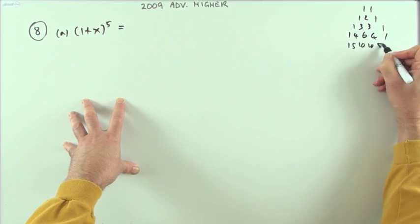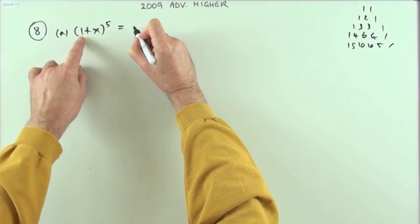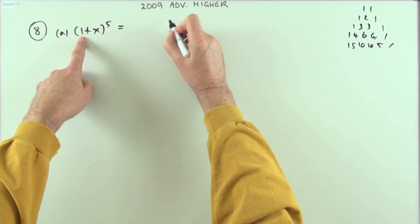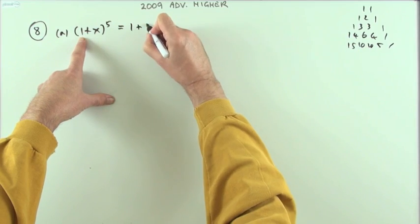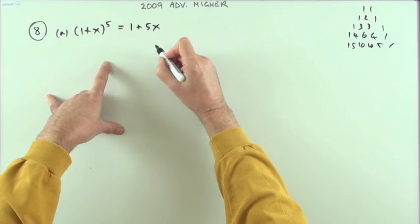1, 5, 10, and the rest are the same: 10, 5, 1. So what have I got now? All the powers of one - 1 to the 5, 1 to the 4 will just be 1. So I'll start off with a 1, and then they'll start to come in, so it'll be 5.